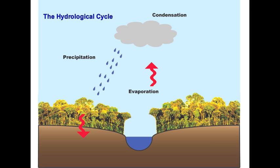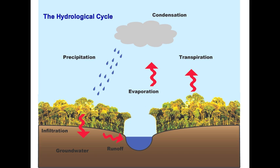Once the water reaches the ground, one of two processes may occur. Some of the water may evaporate back into the atmosphere, or the water may penetrate or infiltrate the surface and become groundwater. Groundwater either seeps its way to the oceans, rivers, and streams, or is released back into the atmosphere through transpiration. Transpiration is the evaporation of water from leaves and stems of plants and trees.